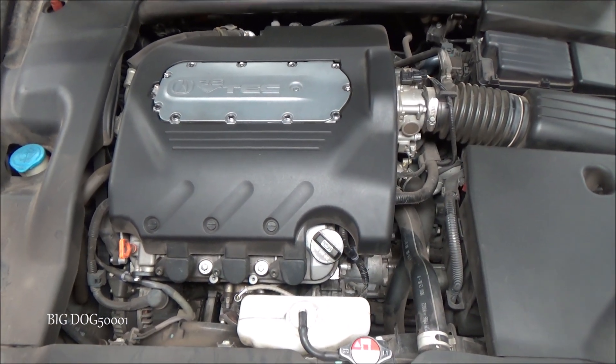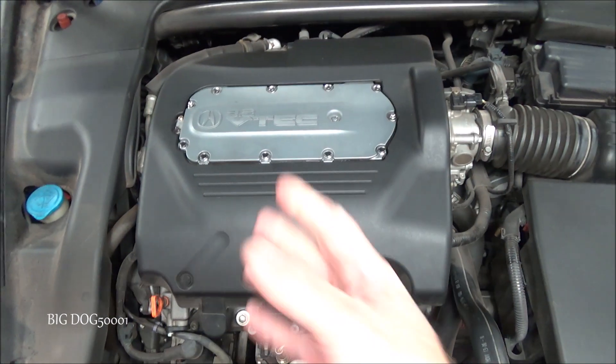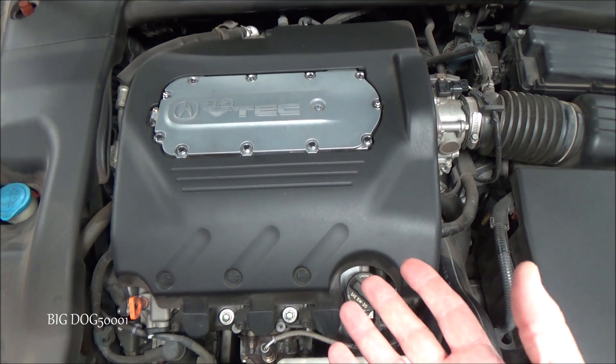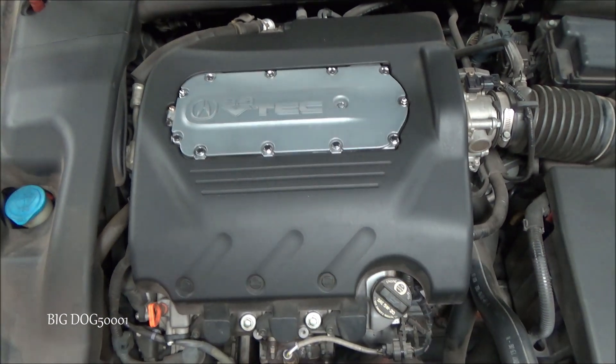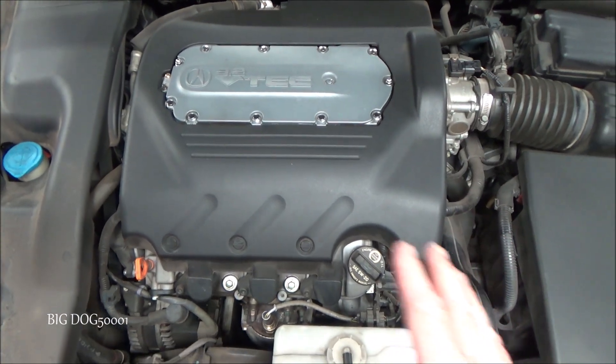Now before we grab the scan tool and try to diagnose this, how about a little background info. This is a pretty straightforward J series engine that Honda and Acura have used. This one happens to be a 3.2 liter variation but they're all going to be very similar in the way they're set up and run.